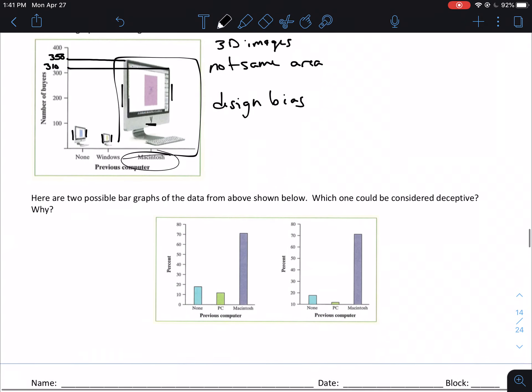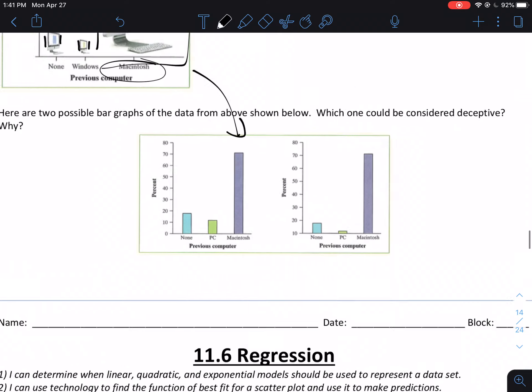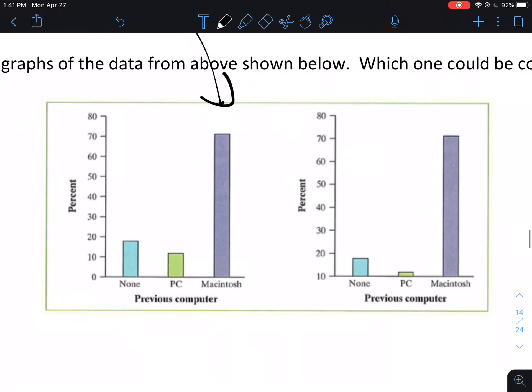So, one more here for us to look at. There are two possible bar graphs. So what they've done here is they've taken the data from this previous example, and they've made two different bar graphs out of it. Which one could be considered to be deceptive and why? So taking a look at these, they look like pretty much the same graph. There's one key difference, though. So you might look for it first, and then I'm going to point it out for you. And the one key difference is where the graphs start. Notice that the graph on the left starts at 0, the graph on the right starts at 10.